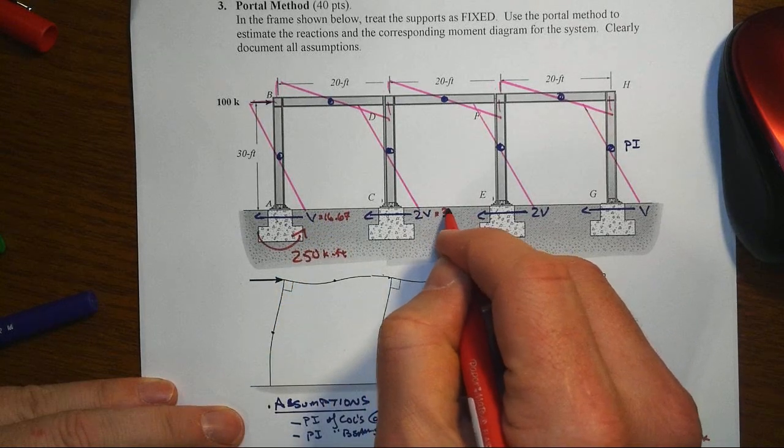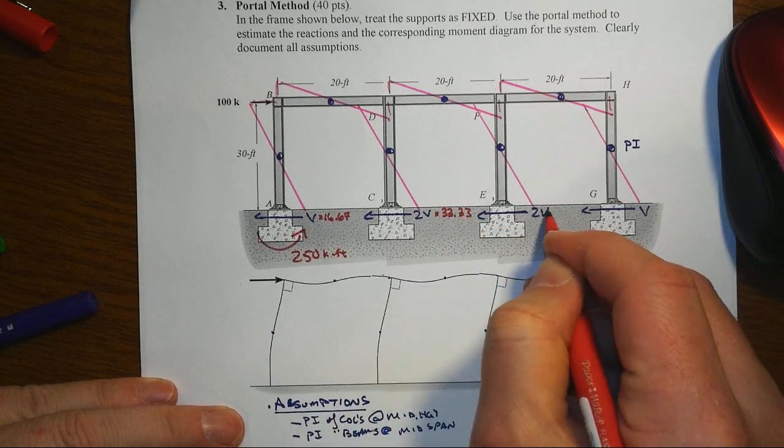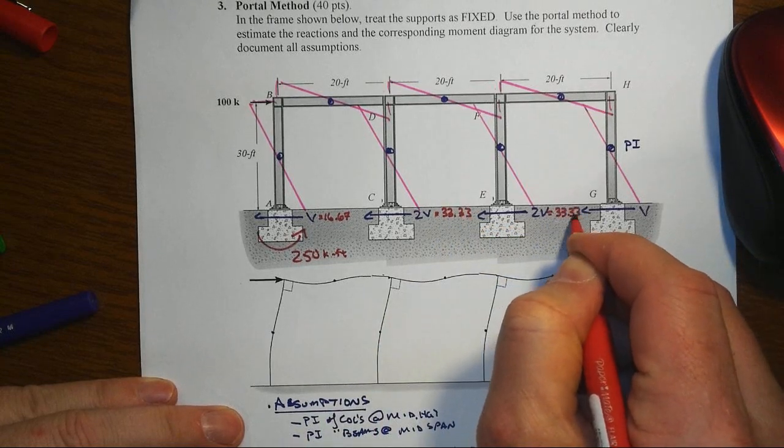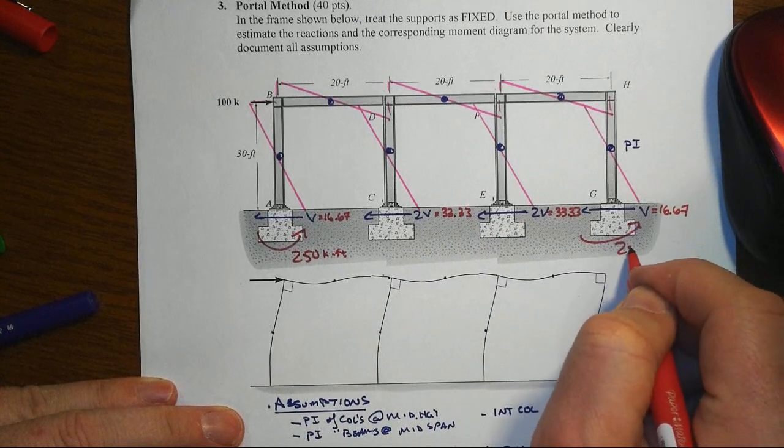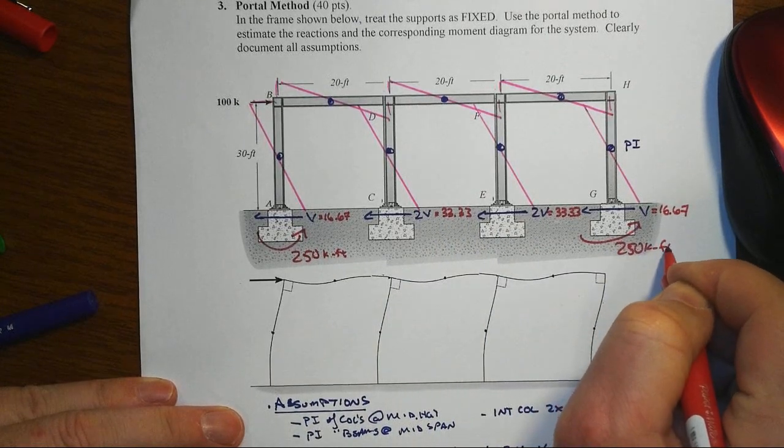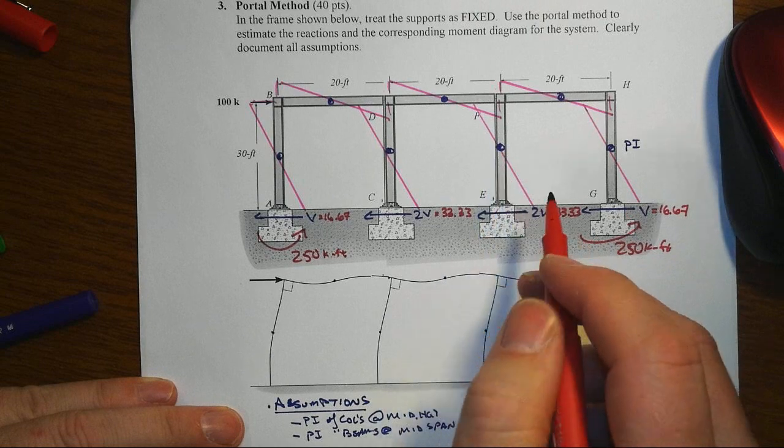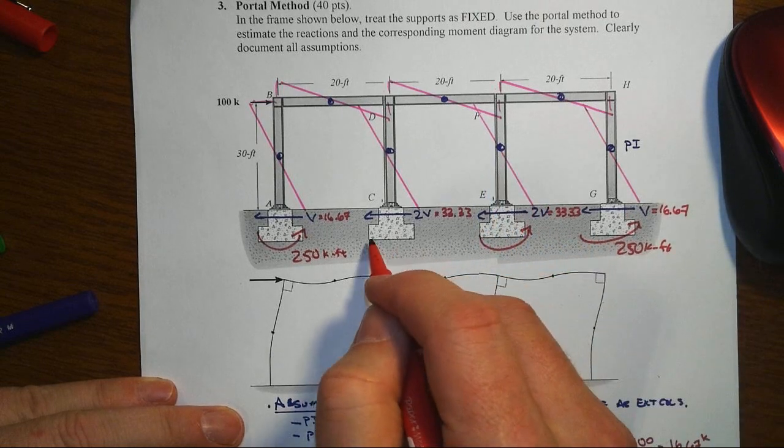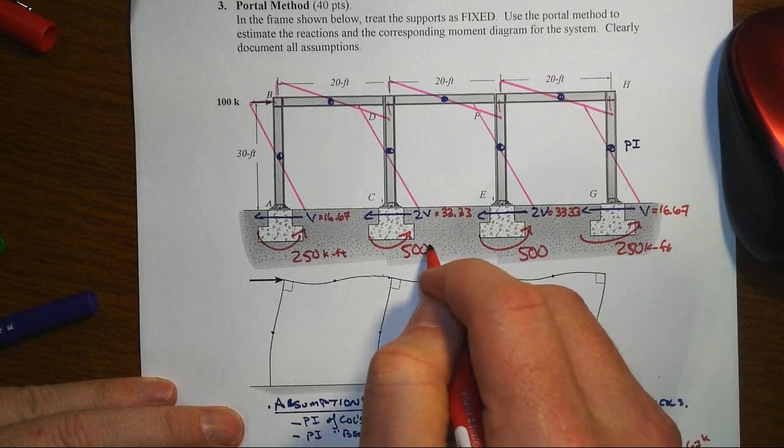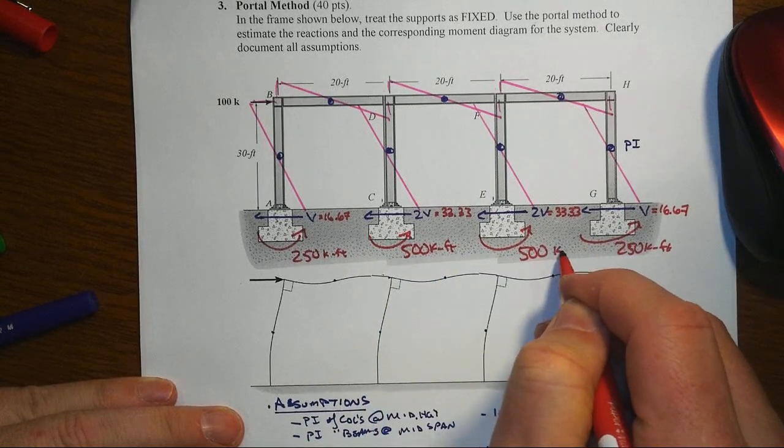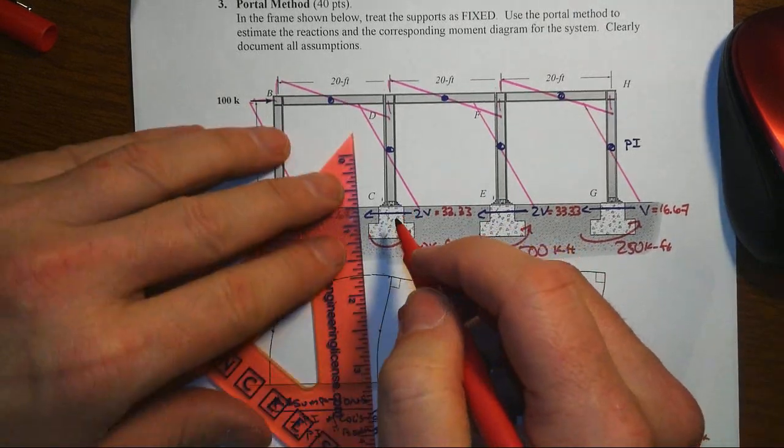That's going to be twice that, or 33.33. That one is 16.67, our moment on that one will be 250 kip foot. Notice that we have twice this shear, same height, so the moments on the middle ones will be double. So there's your 500 on each of those. So the only thing we're missing now for reactions are the vertical reactions.